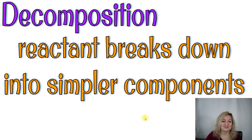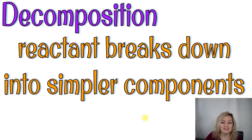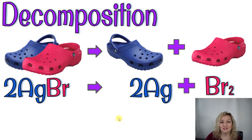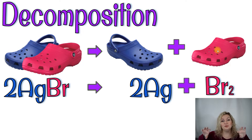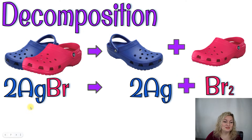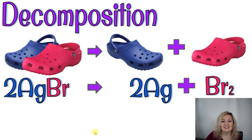Next is decomposition. It sounds exactly like what it means — to decompose means to break apart, and that's exactly what we're doing here. This is pretty much the opposite of synthesis: reactants break down into simpler components. With the crocs, we have a blue and pink croc starting out together and they yield a blue and a pink croc separate. Chemically, we have 2AgBr yielding 2Ag separate from Br2 — taking a big component and breaking it down into simpler ones.